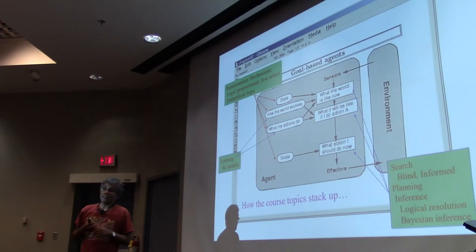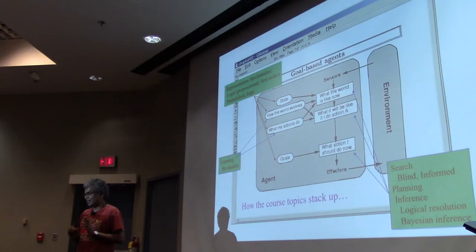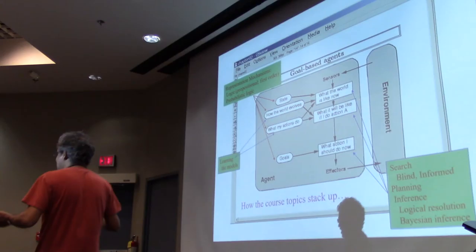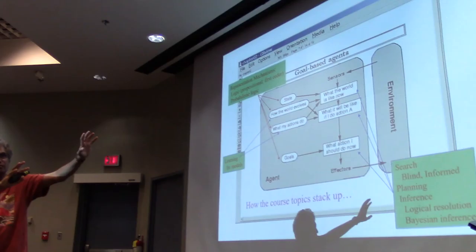Planning essentially means finding a path — a sequence of states. But the area of planning is typically concerned with situations where the representations are not atomic but the state has structure. When the state has structure, the search algorithms can exploit that structure in interesting ways.